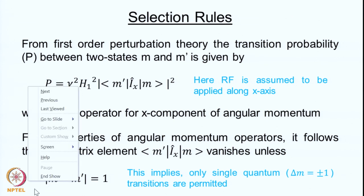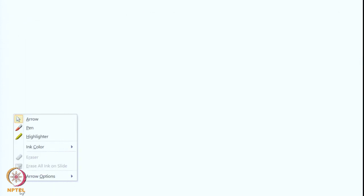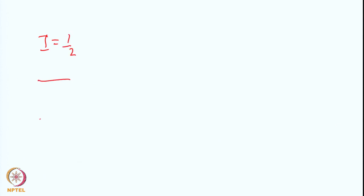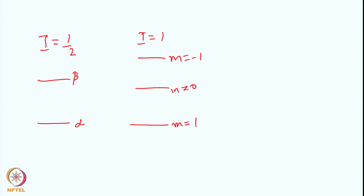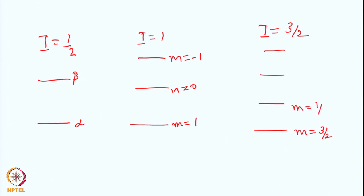Let me illustrate this more clearly. For I equal to half, we have two states alpha and beta, for M equal to plus half and minus half. For I equal to 1, there are three states: M equal to minus 1, M equal to 0, and M equal to plus 1. For I equal to 3/2, there are 2i plus 1 equal to 4 states: M equal to 3/2, 1/2, minus 1/2, and minus 3/2. Notice all energy levels are equally spaced.